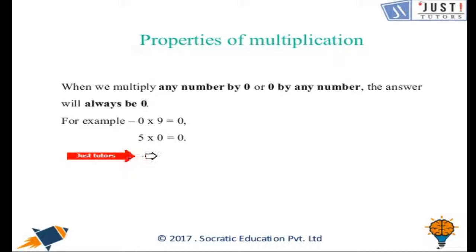And if we have 5 times 0, that will be 0 again. So 0 multiplied by any number gives 0.